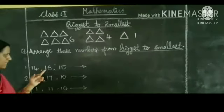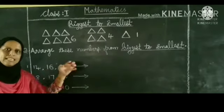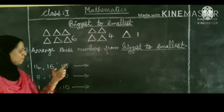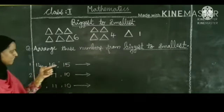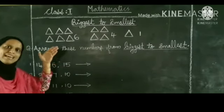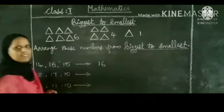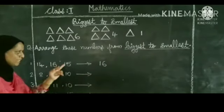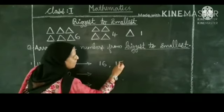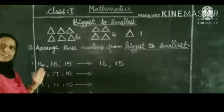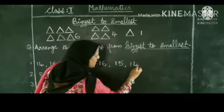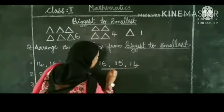The first question: the numbers are 14, 16, and 15. Here we have to use backward counting from 20 to 0. From that order, 16 is the biggest, so write 16 first. Then the next bigger number is 15. Then the smallest one is 14. So the order from biggest to smallest is 16, 15, 14.